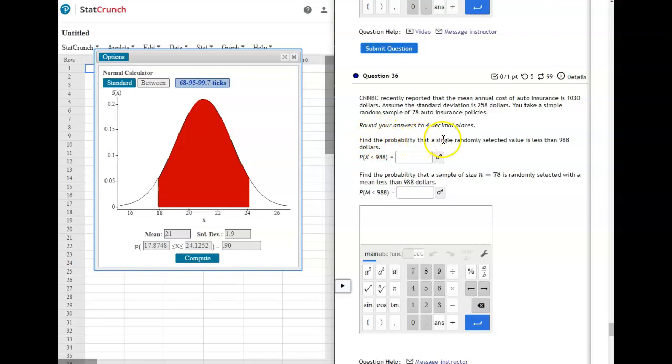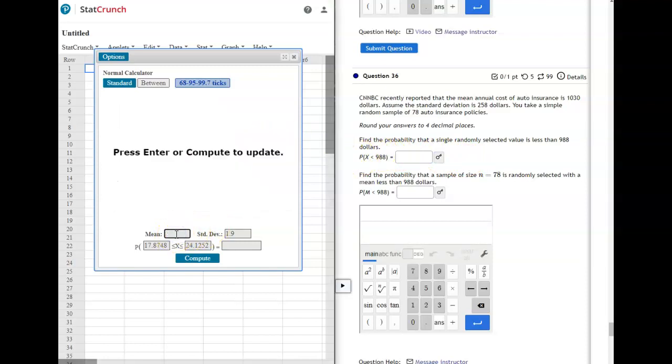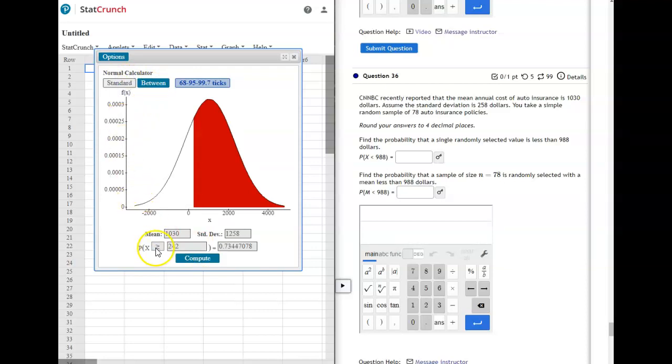So we're going to find the probability that a single randomly selected value is less than $988. So since this is just talking about one individual thing, a single randomly selected, that means we're going to just do this the good old-fashioned way that we've been working with. We're going to enter the mean and the standard deviation just like it is and we want to know the probability is less than $988.